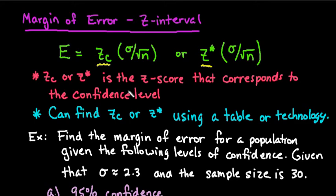The z-score, z_c or z star, is just the z-score that corresponds to the level of confidence. Technically what's happening with the confidence level is that it's centered in the normal curve, and you're just trying to figure out what is the z-score that corresponds to that area in between.